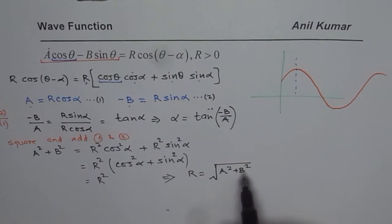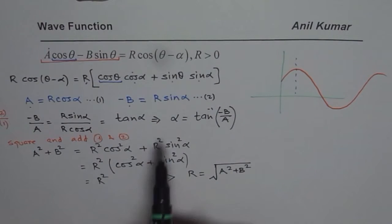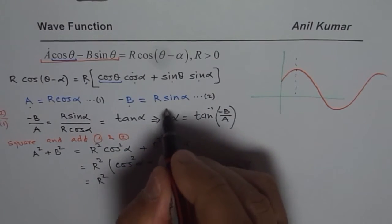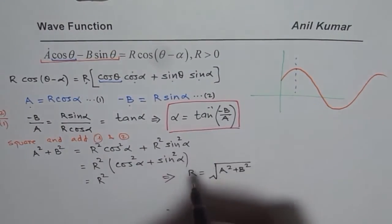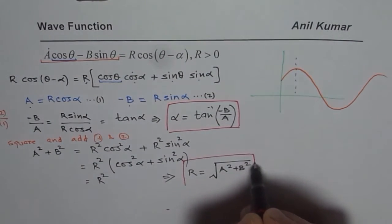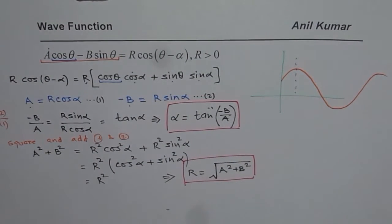In general you see we can write any equation which is combination of sine and cosine in this particular form, where α is equal to tan inverse minus B by A and R is square root of A² plus B².